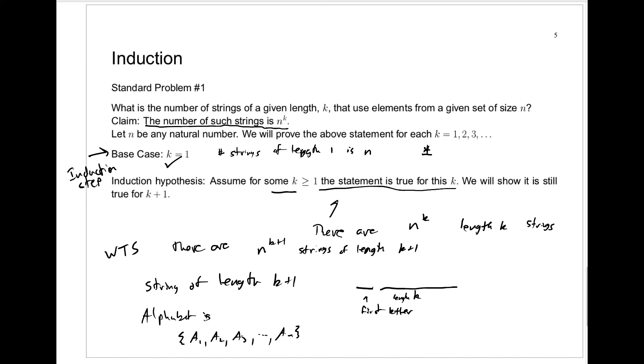And the same argument says their n to the k would start with an a2. And their n to the k would start with an a3, etc. So the number of these is n to the k plus n to the k plus n to the k. How many times? Well, n times. And that's just n times n to the k, which is n to the k plus 1.